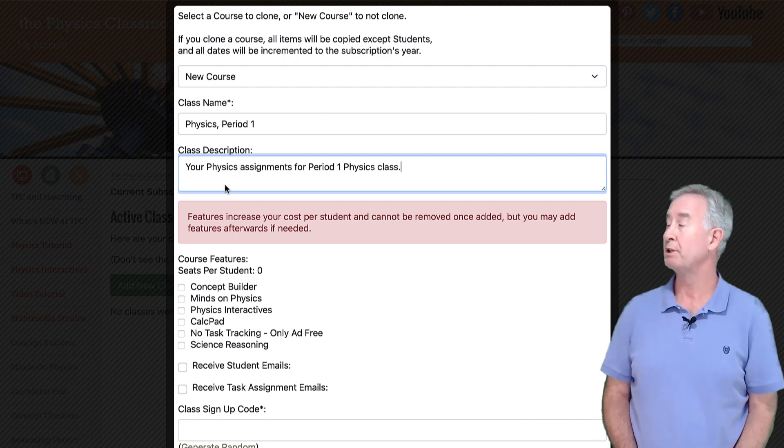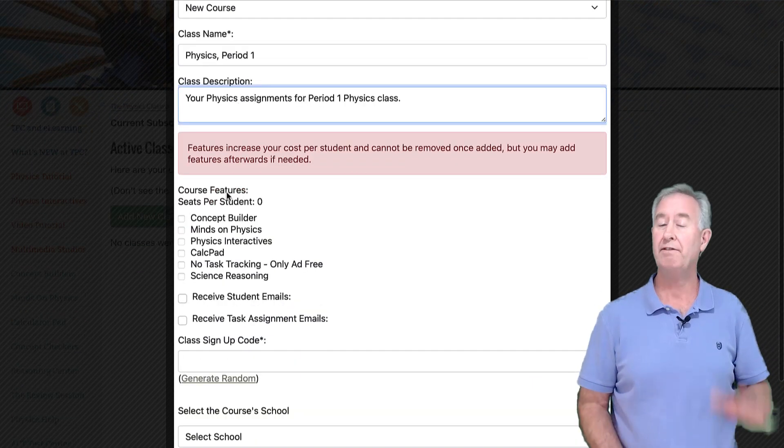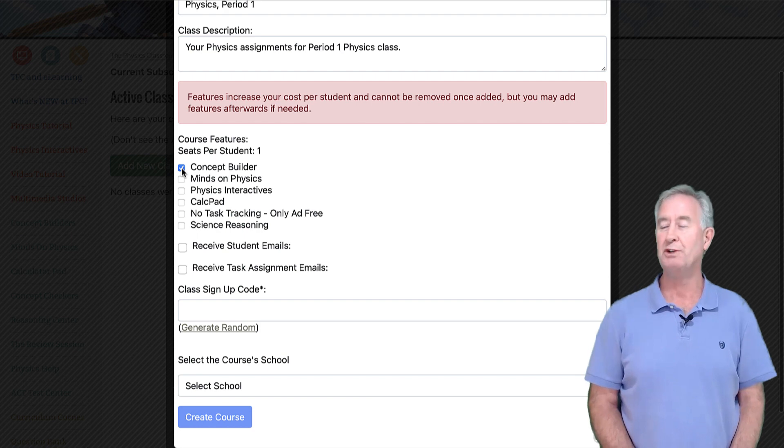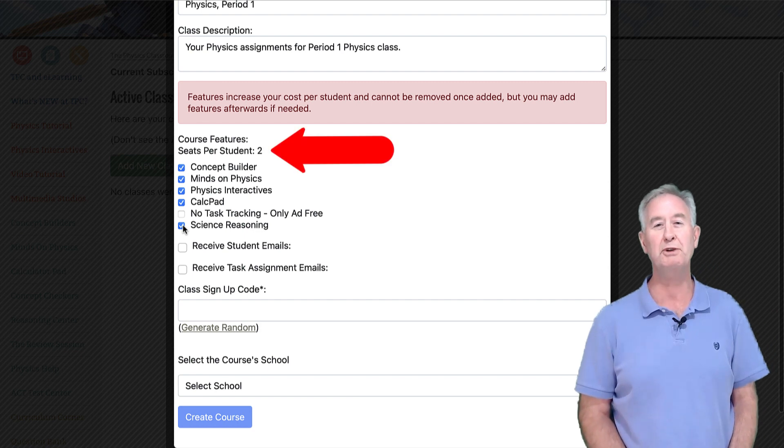Now it's time to select your features. In the year 23-24, we have five Task Tracker features. The baseline cost is one seat per student per feature. But if you plan for two seats per student, you can select all five features using our discounted bundle of buy two seats and get three additional features for free. So select all five features if that's what you've planned for. You'll notice that it shows two seats per student once you've selected all five features.